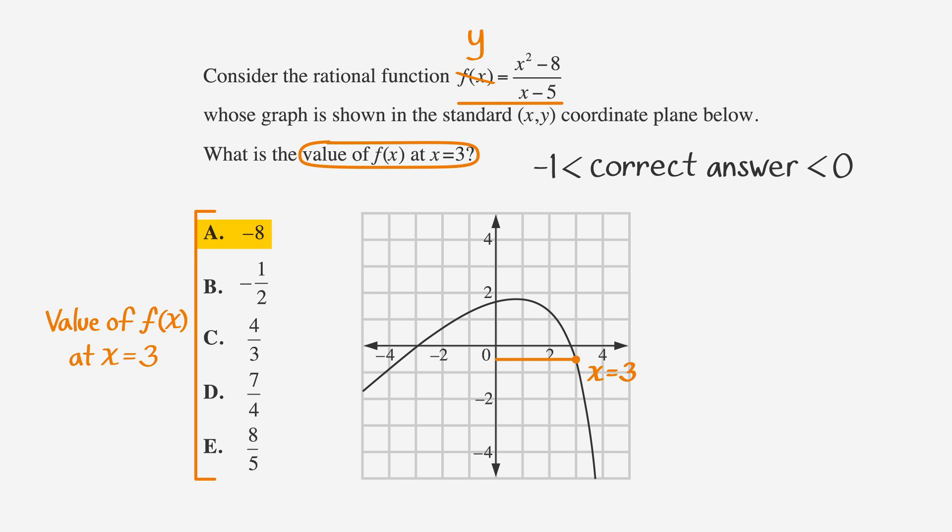Negative 8 is too small, so we can eliminate choice A. Negative one half is within the range that we identified, so let's leave that for now. Answer choices C, D, and E are all greater than 1, so they seem to be too big. We know our answer has to be less than 0 and those are all positive. So let's cross them off and circle our answer B.